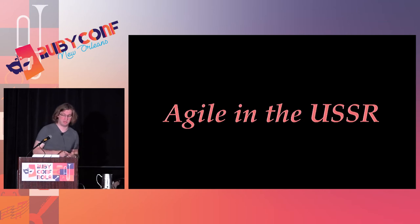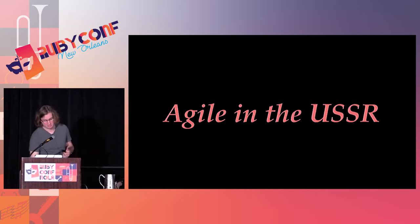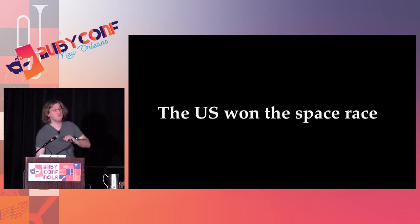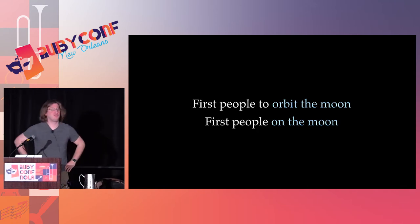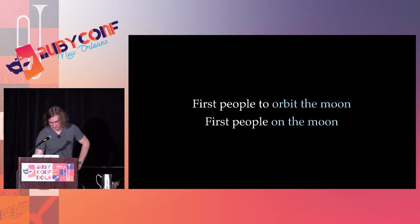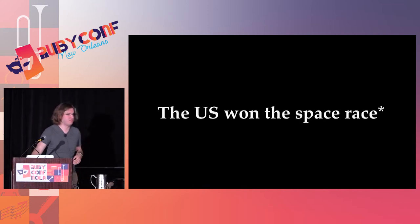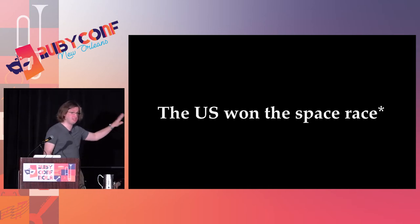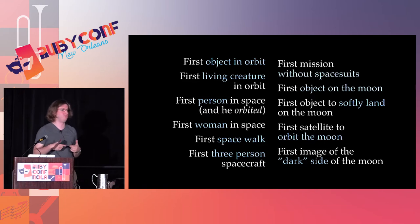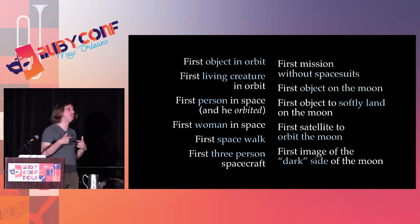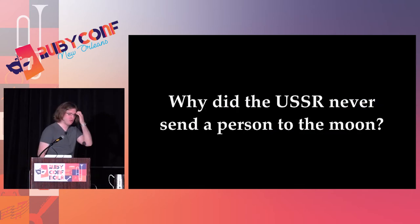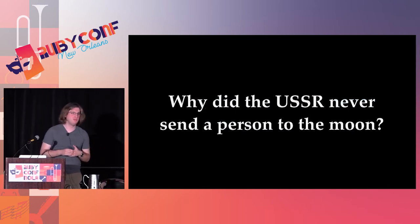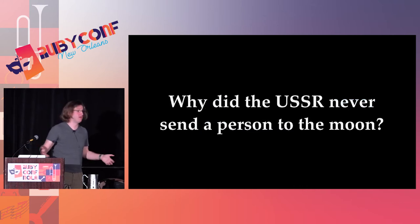The next thing I want to talk about is agile development — in the Soviet Union. We all know the US won the space race because we put the first people on the moon and had the first people orbit the moon. But the problem is that ignores the rest of the space race. The USSR beat us at every step of the space race, which is why we didn't feel so good throughout it. So the question is: why did the USSR never manage to send a person to the moon, if they beat us every step of the way?